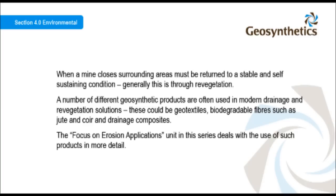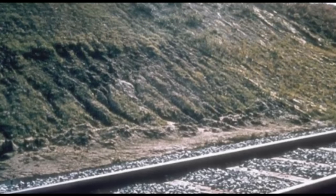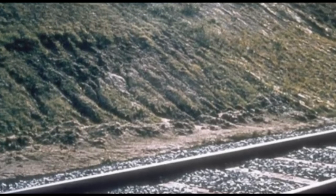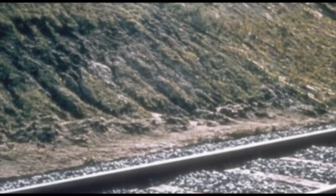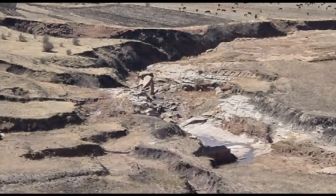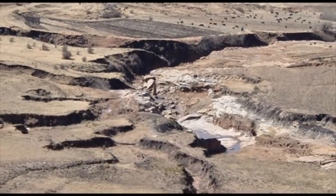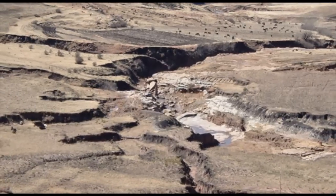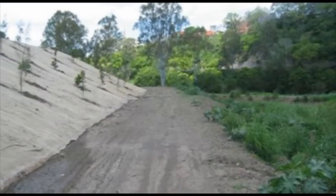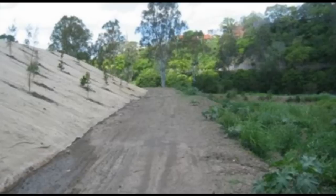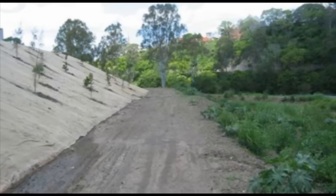The focus on erosion applications unit in this series deals with the use of such products in more detail. When a slope is left unremediated, the top soil layer is lost and vegetation will never properly establish. This could be localized or on a very broad scale. Revegetation of slopes and protection of the top soil can be achieved through the use of geosynthetics, known as erosion control blankets.